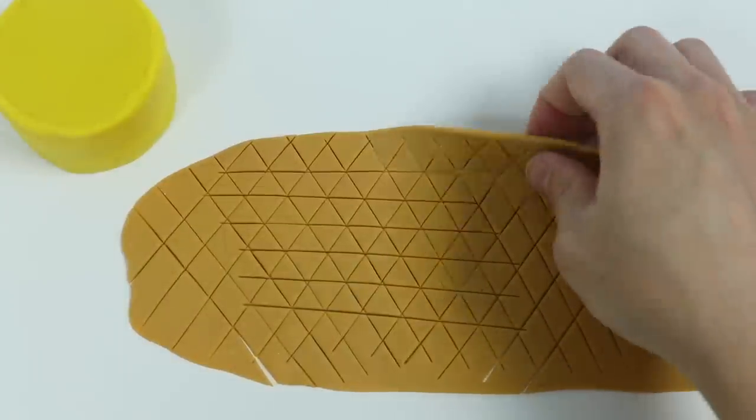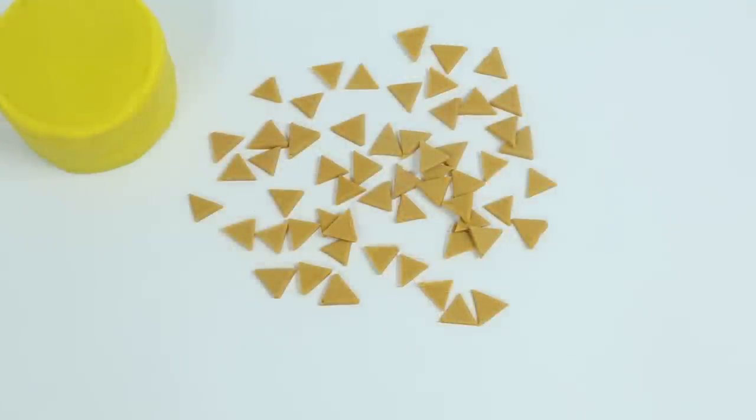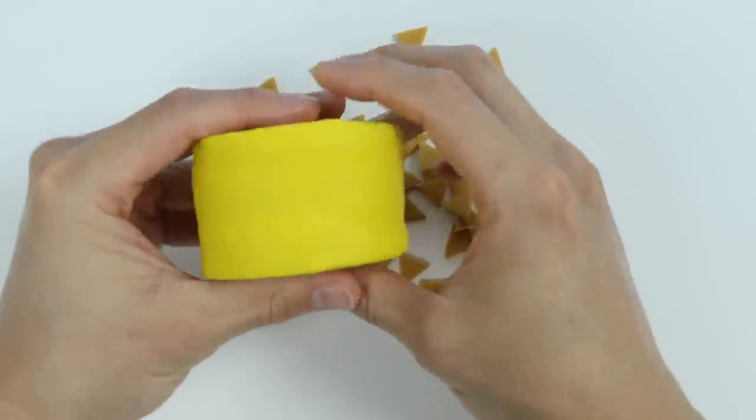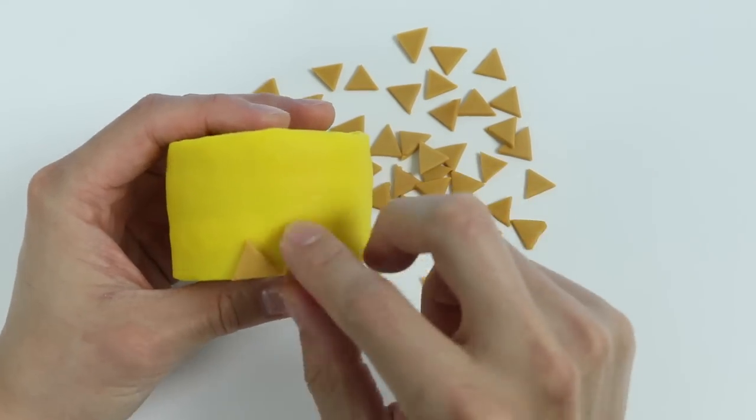Now, let's remove all the extra Play-Doh. Okay, now that all the triangles have been separated, let's start decorating our cake. These brown triangles will be our pineapple skin decoration. Hang tight while I finish this up.